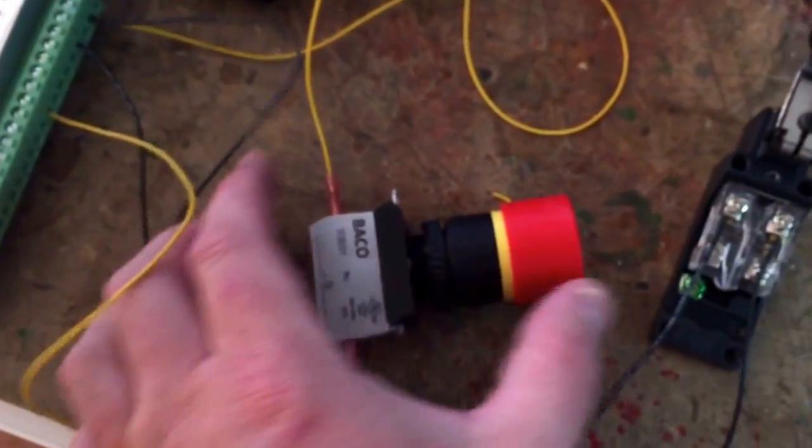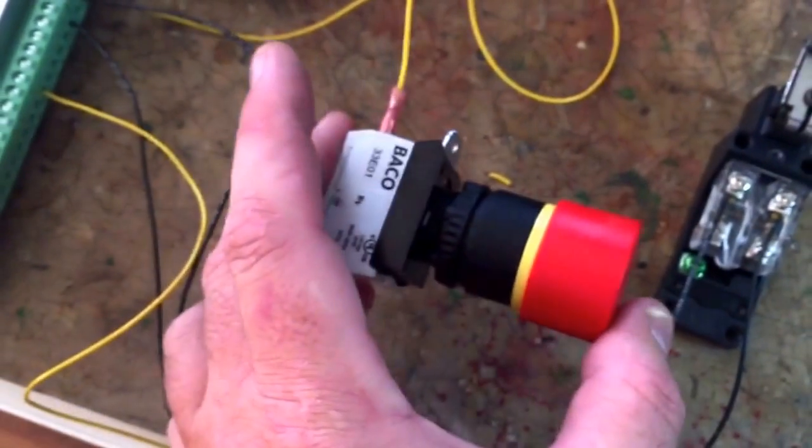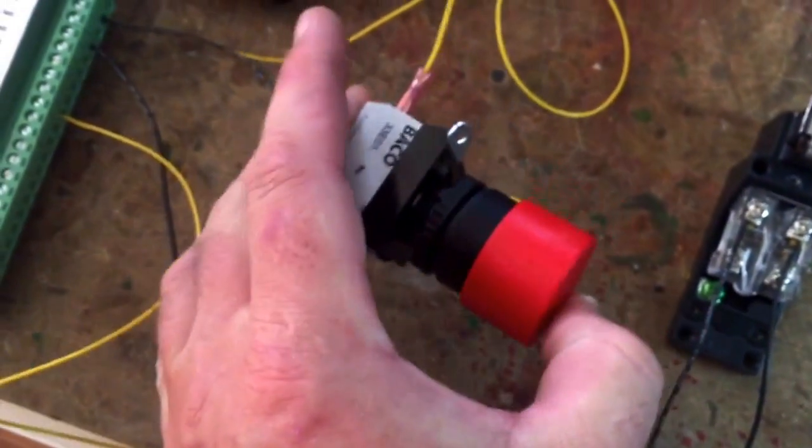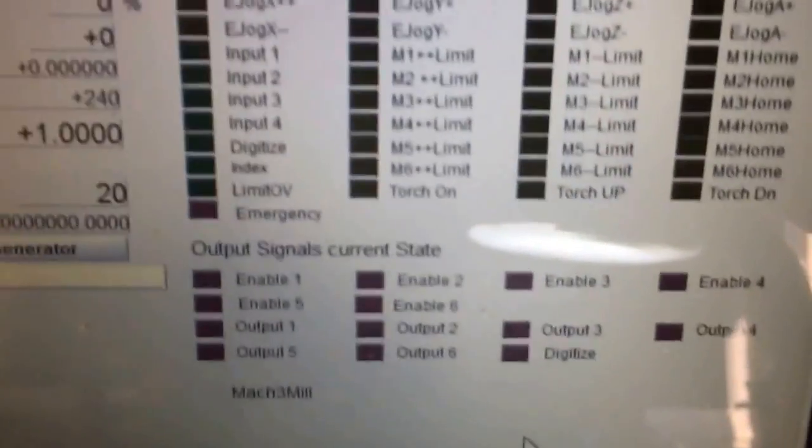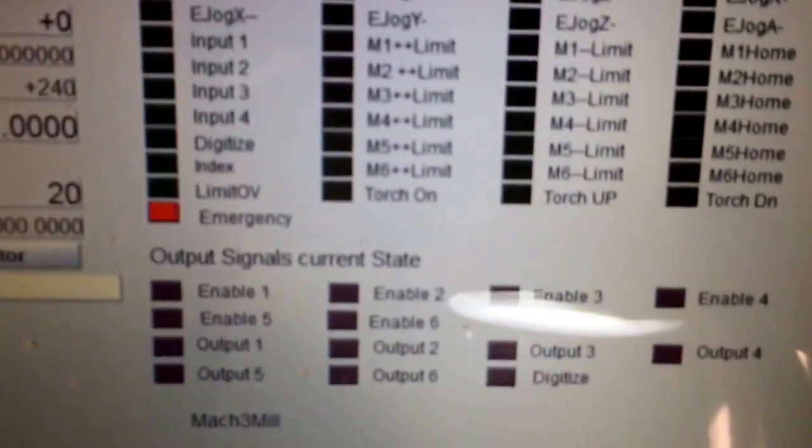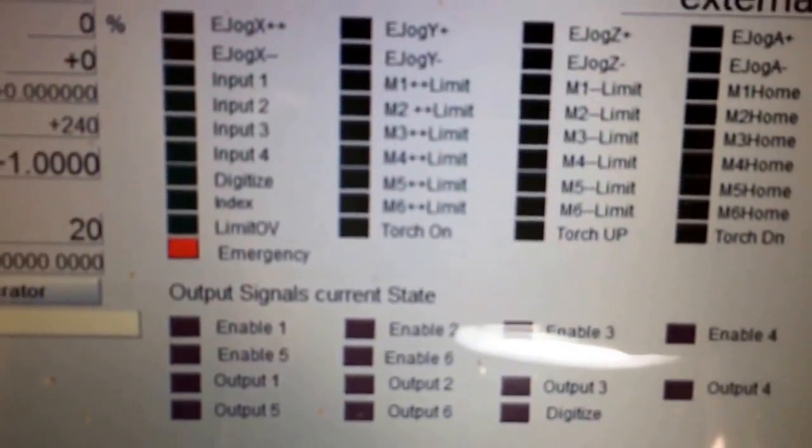So what I'll do here is here's the e-stop. Right now it's not an e-stop. So I'll press it in. Now that's enabled the e-stop alarm. Everything would stop in the controller. And you can see there's the signal from the e-stop switch flashing away.